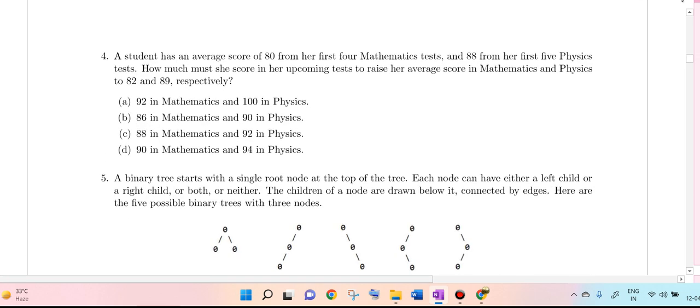Next, a student has an average score of 80 from her first 4 mathematics tests and 88 from her first 5 physics tests. How much she scored in her upcoming test to raise the average score of mathematics and physics from 82 to 89. The average has to be increased.